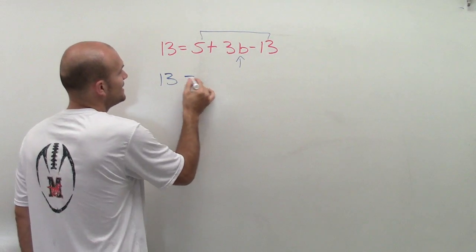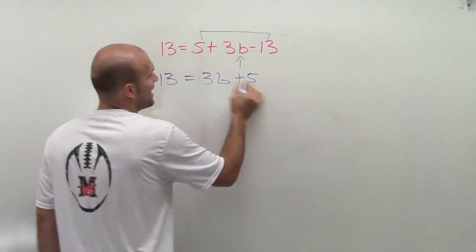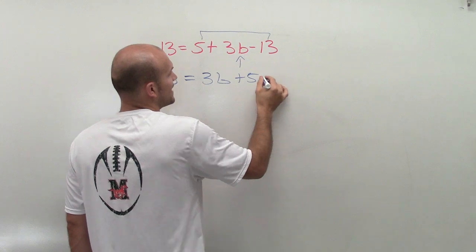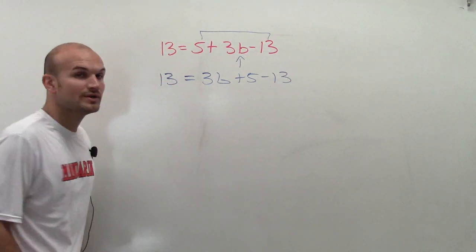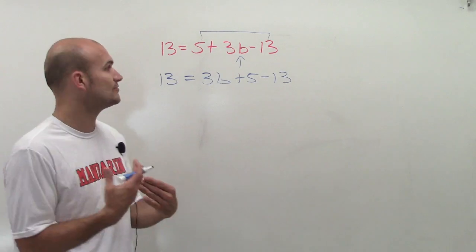Now, I can combine them by rewriting it, if I would like. So I think, since that's a positive 5, I'm going to write plus 5 minus 13. So I could rewrite it using the commutative property. Right? Commutative property of addition says I can rewrite it.